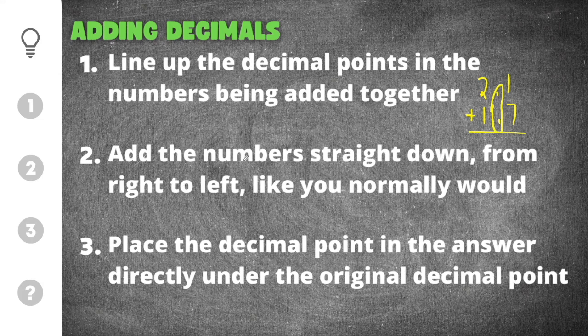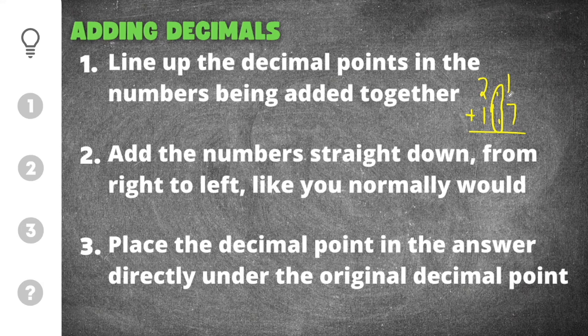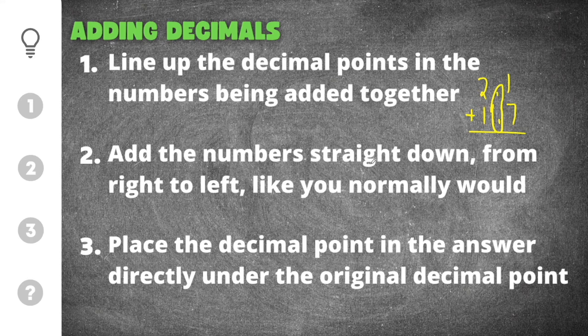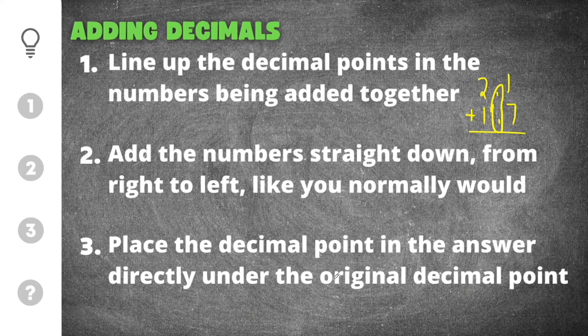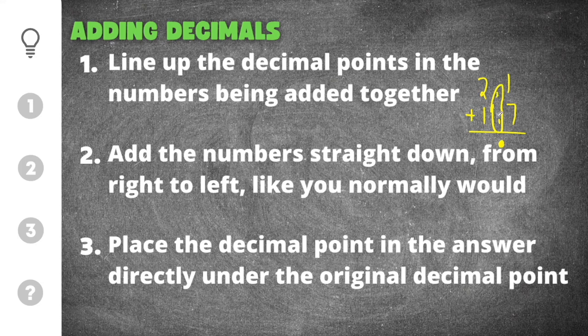After that step you're going to add the numbers straight down from right to left, just like you normally would. You add the decimals exactly the same as you would if they were whole numbers. Finally, you will place the decimal point in the answer directly under the original decimal points.